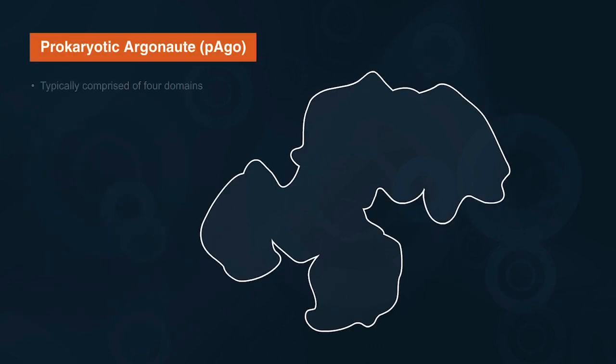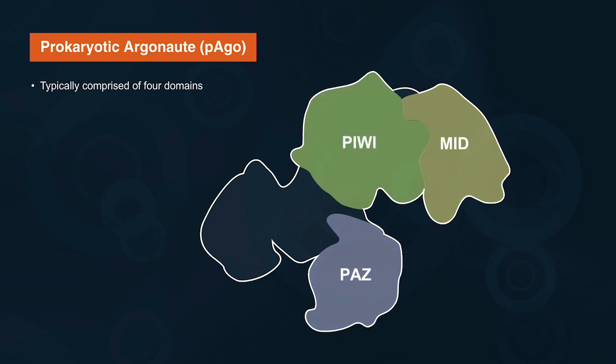Prokaryotic Argonaut proteins are typically comprised of four domains: the MID domain, the PIWI-associated domain, the PIWI domain, and the N domain.